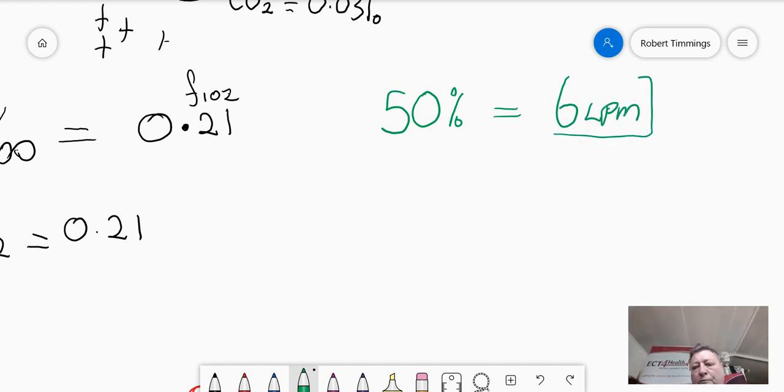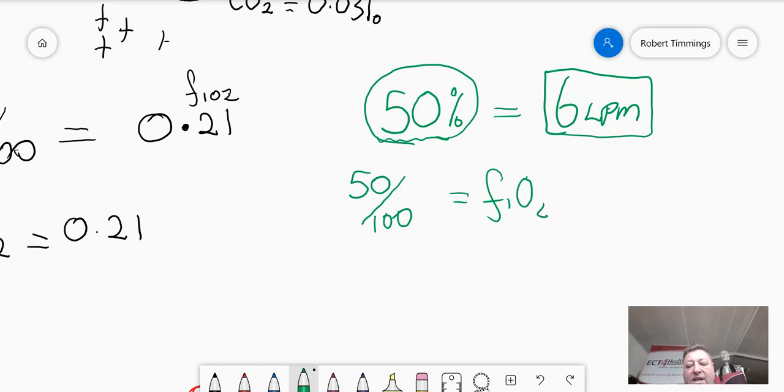So, with a good fitting simple face mask, therapy mask, 6 litres per minute is giving approximately 50% oxygen. As an FiO2, we can calculate that if 50 parts per 100 parts of the air that the patient is now breathing is oxygen, then the FiO2, the fraction of inspired oxygen that that patient is breathing, is now going to be simply that mathematical equation.